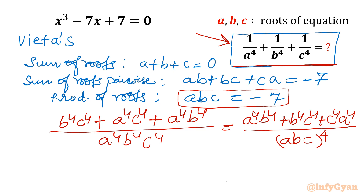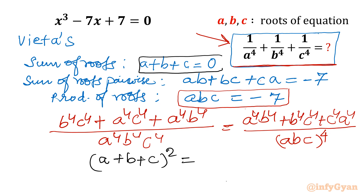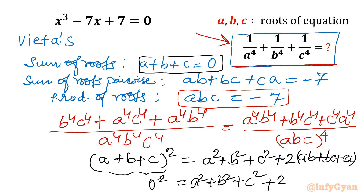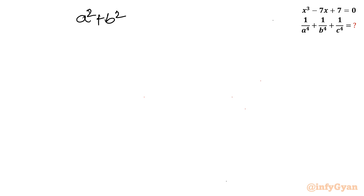Now the task is to find the numerator. I'll start with (a + b + c)², which expands to a² + b² + c² + 2(ab + bc + ca). Substituting: the left side is 0² = 0, and the right side gives a² + b² + c² + 2(-7). Therefore a² + b² + c² = 14.